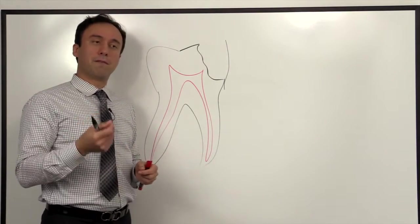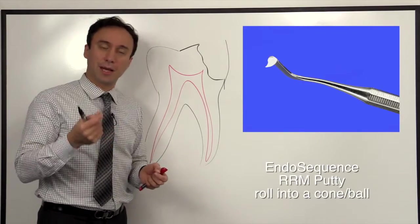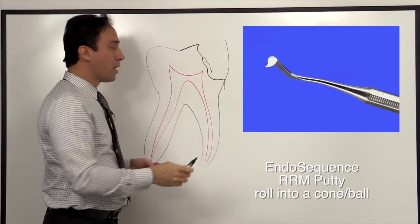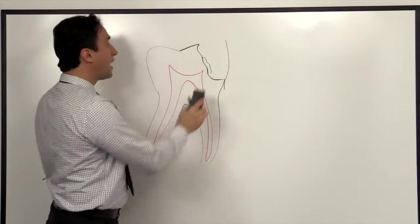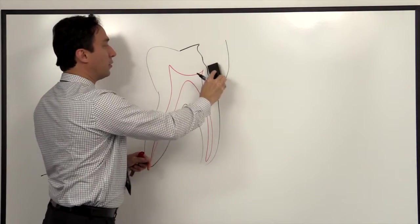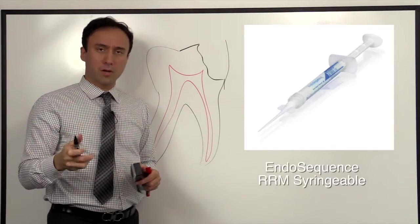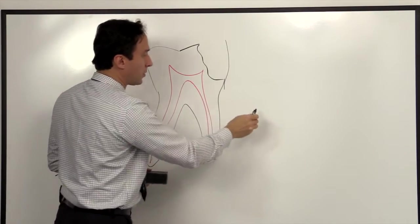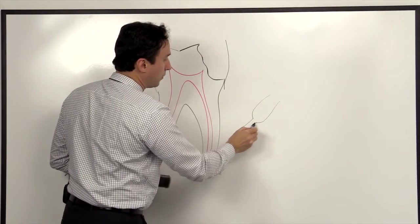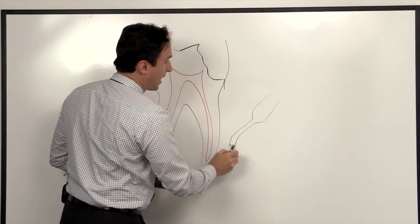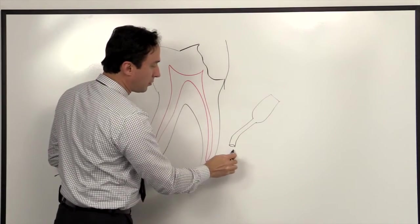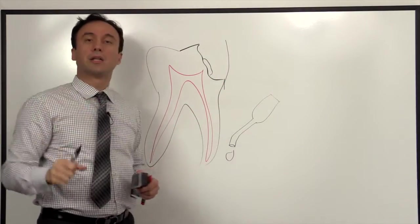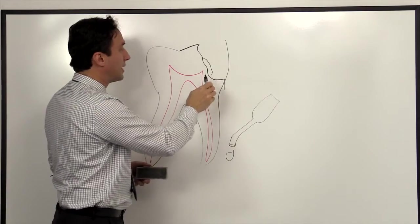And the putty is very hard, like a cavit, and you can actually turn that into a little ball and place it the same way as you did with Dical. But what I have found is even more efficiently, I can use the syringeable material, which is the RRM syringeable material. And you can actually use a small little syringeable tip, like your acid etch tip. And you can actually put a little dollop of the material directly here, which will very quickly just spread out and cover the dentin.